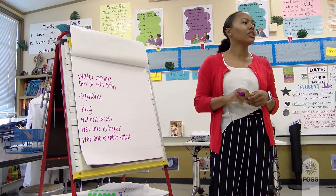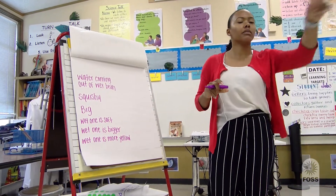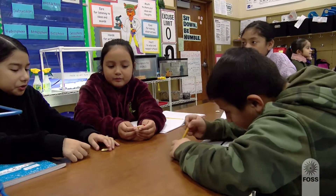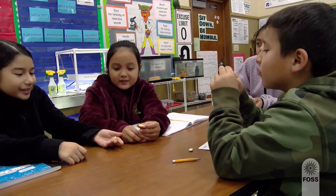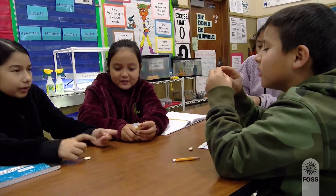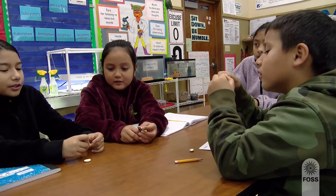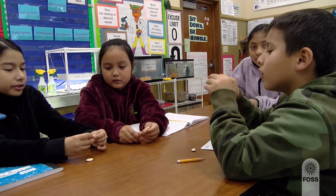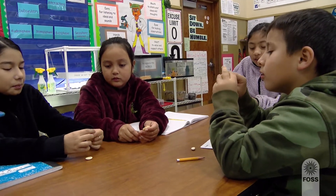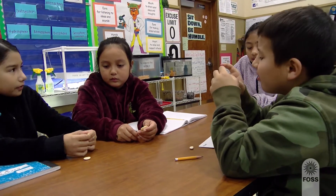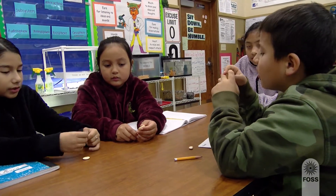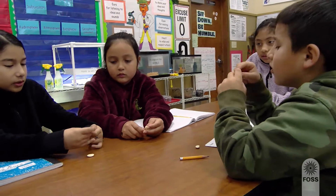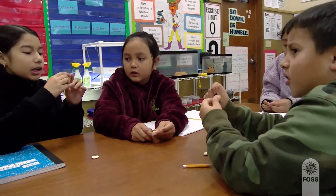Teacher: What questions do you have? Talk with your group. Students generate questions: Is it gripping? Why is it crinkly? Why is it so squishy? But then on the top it's soft, and on the sides it's hard.